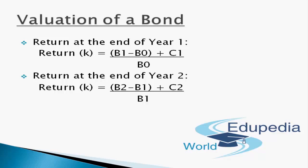That's how we can value a bond over a period of one or two years. However, in CA final examination questions, you won't get questions this straightforward. If we need to calculate the valuation of a bond for a period involving more than 2 years — 3, 5, or 10 years, or even to infinity — how can we find the valuation of a bond?